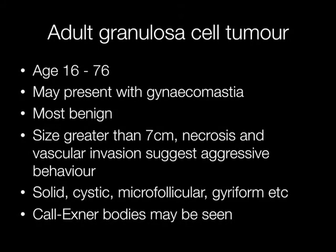The problem with all sex cord stromal cell tumours is that it is difficult to predict the behaviour from histology alone. In this particular case the tumour is very large, and in fact it did behave aggressively, spreading to para-aortic lymph nodes. Histologically it looks like the counterpart seen in an ovarian granulosa cell tumour, with solid, cystic, microfollicular or gyriform areas, and Call-Exner bodies may also be present. The immunostain that clinches the diagnosis is inhibin.